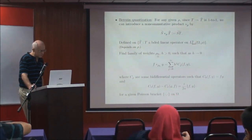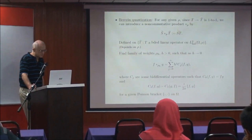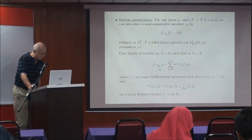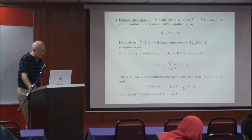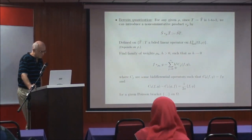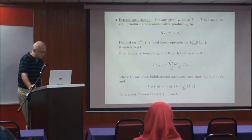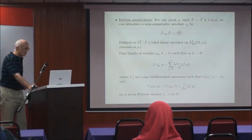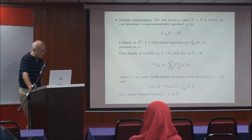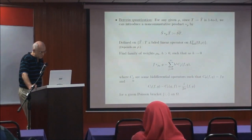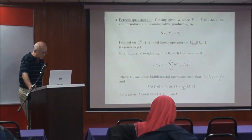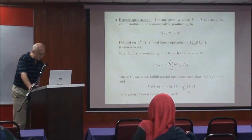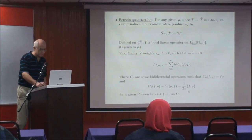The goal is, again, to find a family of weights indexed by the Planck constant, such that as H tends to zero, we have an asymptotic series — this is a star product — as a power series in H, with the C_j coefficients, sometimes called cochains in the algebraic homology interpretation, or Hochschild cochains. These should be some bi-differential operators; again, the leading order should be pointwise product, and the first order anti-symmetrization should be the Poisson bracket with the appropriate normalization.